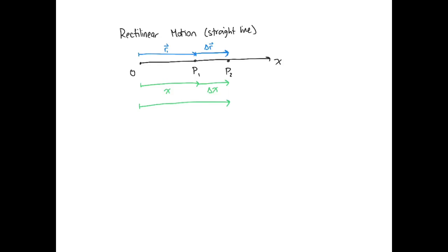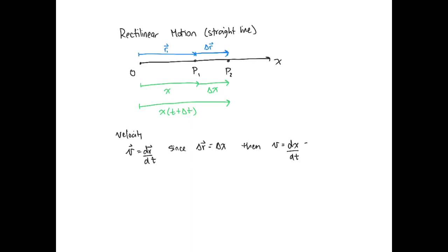We can define x(t) such that x at t plus delta t represents the whole distance traveled. Our velocity vector v, which equals dr/dt — since delta R equals delta x — means velocity is equal to dx/dt, which is x-dot. In this case, we can remove the vector symbol and just deal with scalars.